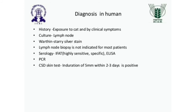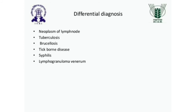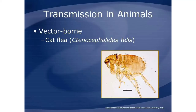The differential diagnoses for CSD include neoplasm of the lymph node, tuberculosis, brucellosis, tick-borne disease, syphilis, and lymphogranuloma venereum.